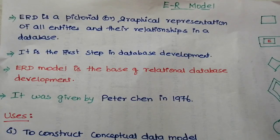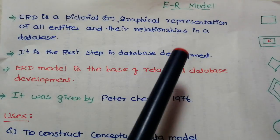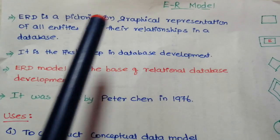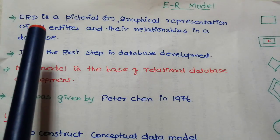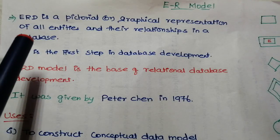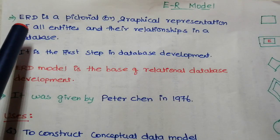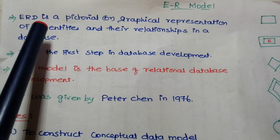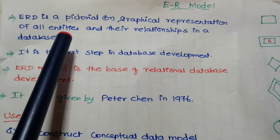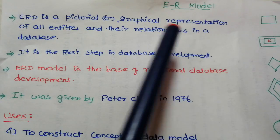Hello friends, welcome to my channel Success Brainy. So next topic is about ER model, that is Entity Relationship Model. Entity Relationship Model is the first step. You collect requirement analysis from customers, and we will design an ER model as a requirement to design. The definition: Entity Relationship Diagram is the pictorial or graphical representation of all entities and their relationships in a database.